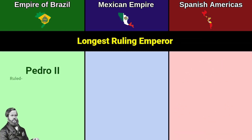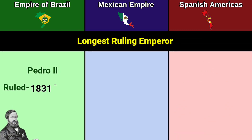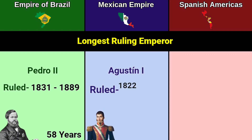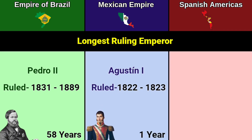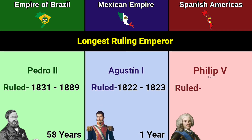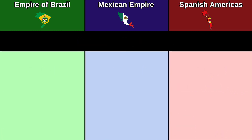Longest ruling emperor: Second Pedro ruled 1831 to 1889, total 58 years. First Augustine ruled 1822 to 1823, total one year. Fifth Philip ruled 1700 to 1746, total 46 years.